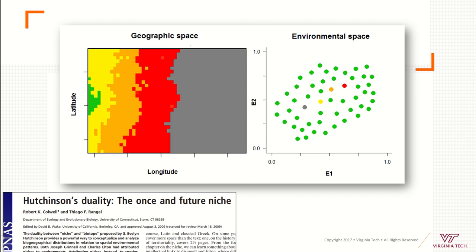Hutchinson's duality basically demonstrates that what happens in geographic space may not necessarily happen in the same magnitude in environmental space. Here I have a map on the left in geographic space with longitude and latitude, showing different environmental conditions — it could be temperature, land cover, or salinity. For example, imagine a large forest in gray, then grassland conditions, then less grass, until we have tundra — different types of habitats.